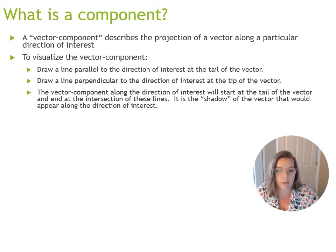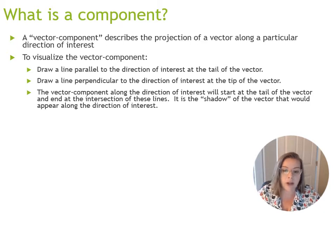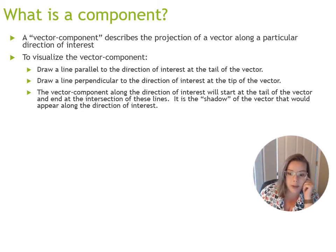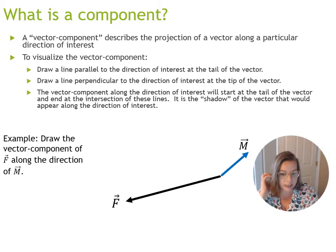Let's talk about what I mean when I say component. I'm going to focus on vector components right now. A vector component is a vector, and it describes the projection of another vector along a particular direction of interest. It really helps to visualize this, so I'll give you an example. You can follow these steps to help yourself visualize the vector component of a particular vector along the direction of another vector.